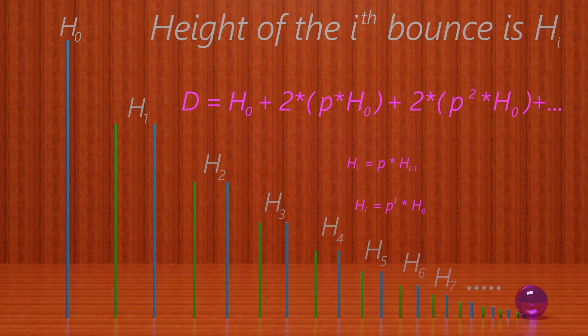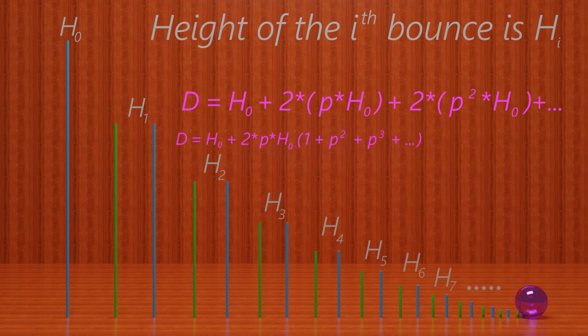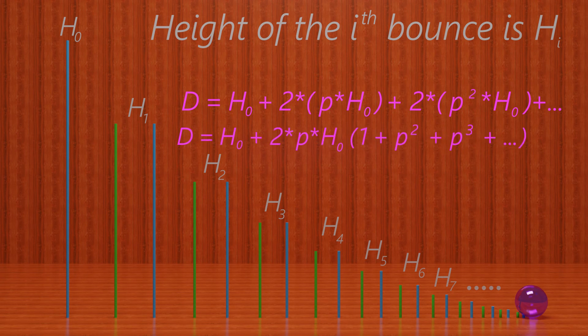We can then factor out H0 and get the following: that distance is equal to H0 plus 2p times H0, then in parenthesis 1 plus p plus p squared plus dot dot dot.